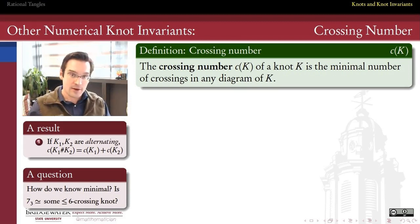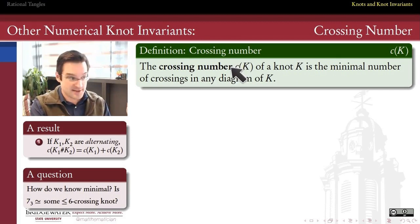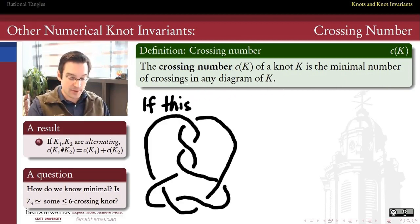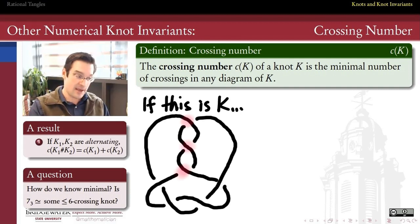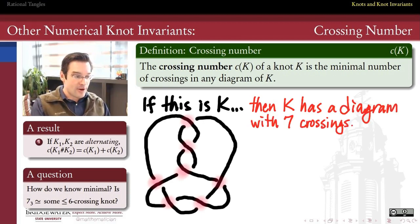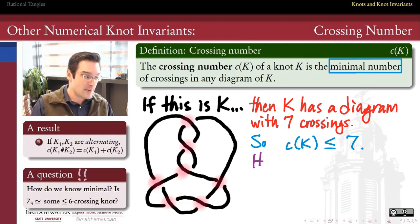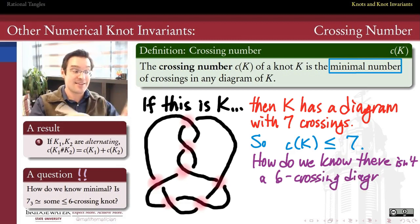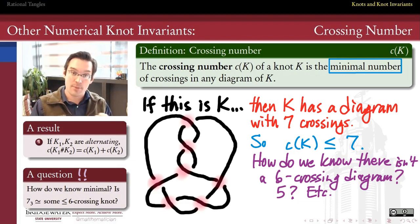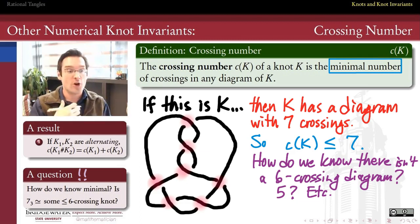The last numerical invariant is one we've hinted at before: the crossing number of a knot. By definition, the crossing number is the minimal number of crossings in any diagram of a knot. Here's an example — this is the knot called seven sub three. This diagram has seven crossings, so we can say the crossing number is no more than seven. The hard question is: how do we know there isn't another diagram of this knot with fewer than seven crossings — maybe six or five? The hard part about crossing number is knowing when we've actually reached the minimum.